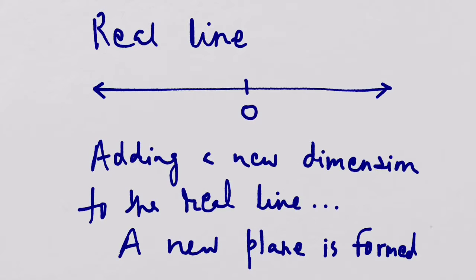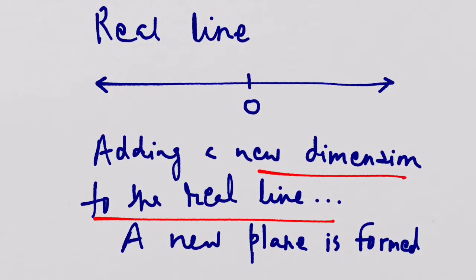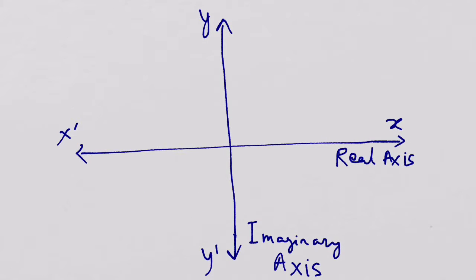We have to add a new dimension to the real line, since the real line can only represent real numbers. By adding a new dimension to the real line, a new plane is formed. A plane is a two-dimensional figure where there is length and breadth.